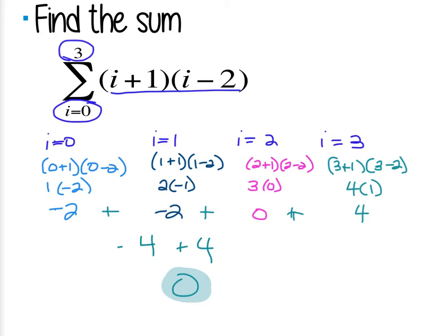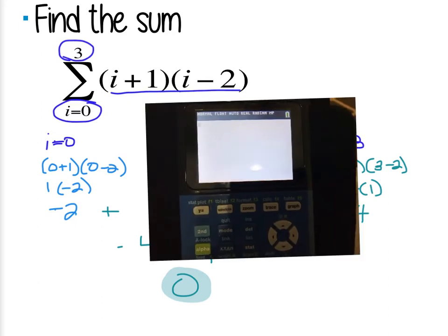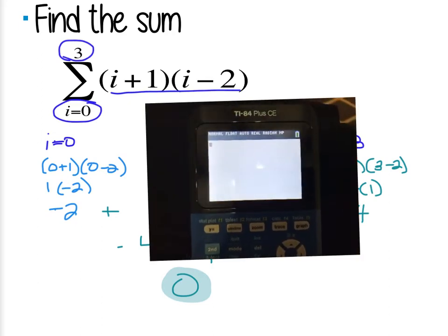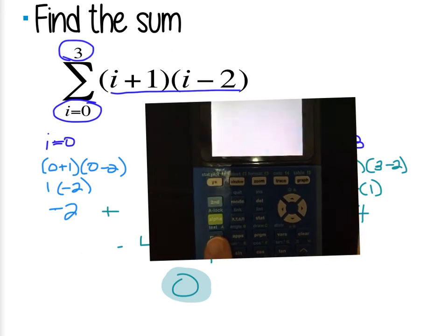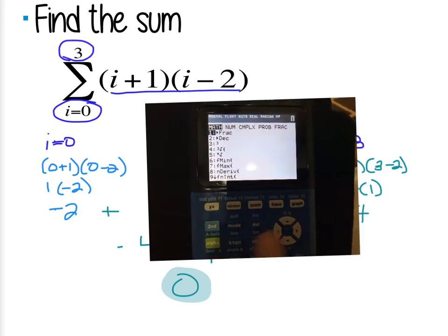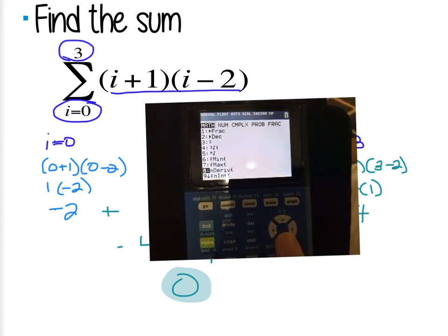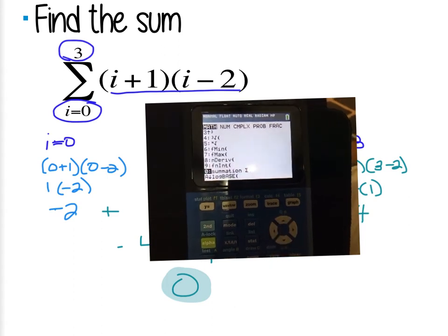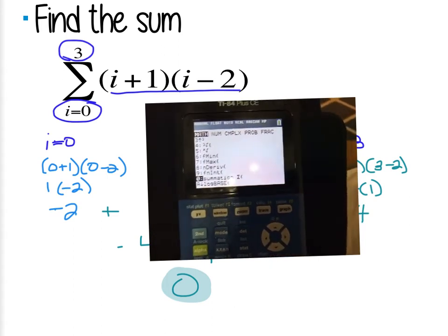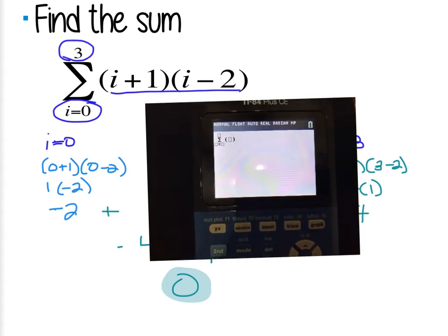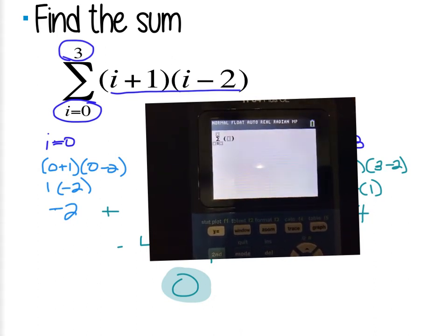So if you have a graphing calculator, if you'll take it out, I'm actually going to show you how to plug this into your calculator. So on the graphing calculator, if you'll go to the button that says math, if I click math, and I scroll all the way down here, you'll see where it says 0, there's summation. If I click there, I get the same symbol that I have, that little sigma notation.